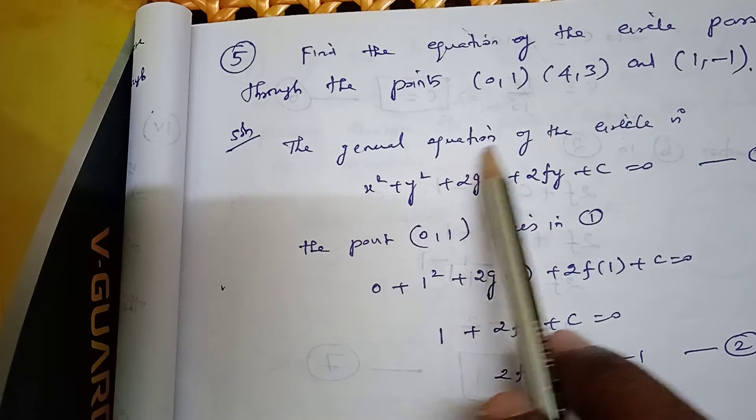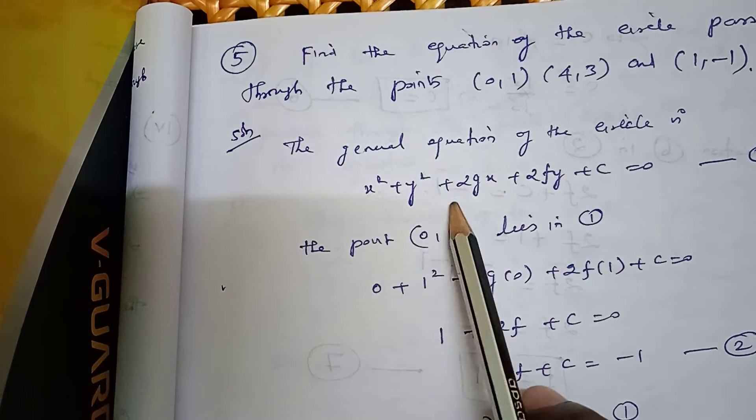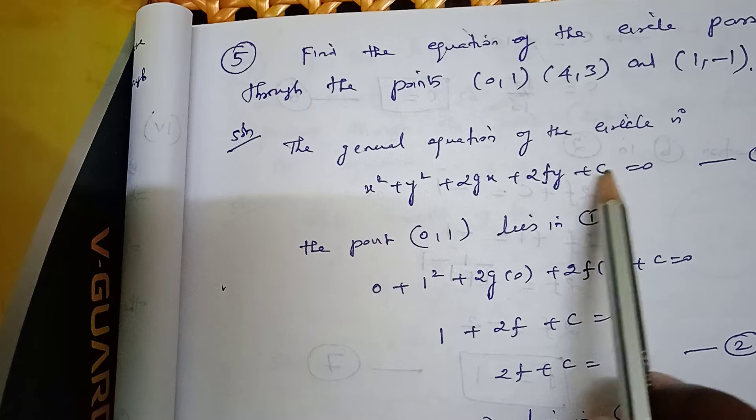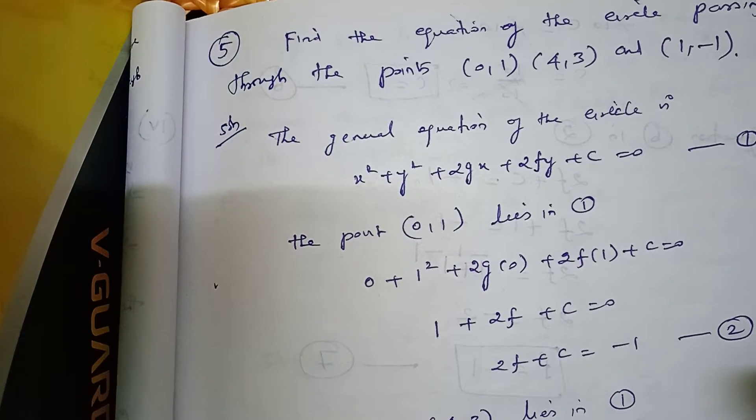Solution. The general equation of a circle is x² + y² + 2gx + 2fy + c = 0. This is equation number 1.